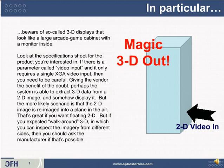On the specification sheet, there should be a parameter called Video Input. If it only requires one video input, like a single XGA video connector, then you really need to be careful. Giving the vendor the benefit of the doubt, it's possible the system contains advanced software that extracts 3D data from a single 2D image and then displays it — but both of those steps are at the edge of today's technology and it's really unlikely. It's great if all you want is a floating, eye-catching 2D image, but if you or your customer needs walk-around 3D in which you can inspect imagery from different sides, you really need to ask the manufacturer if that's possible.